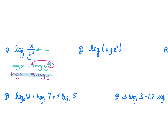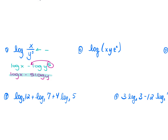For number 6: log(XYZ²). Separate the multiplication with addition to get log(X) + log(Y) + log(Z²). That power becomes a coefficient, giving log(X) + log(Y) + 2·log(Z).